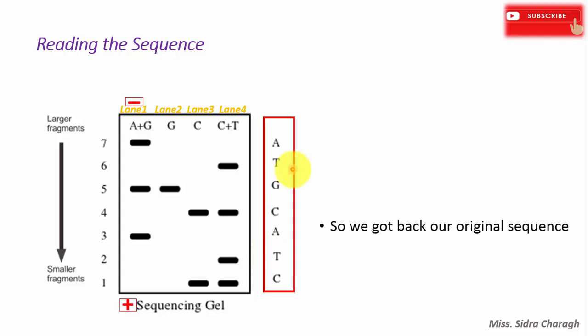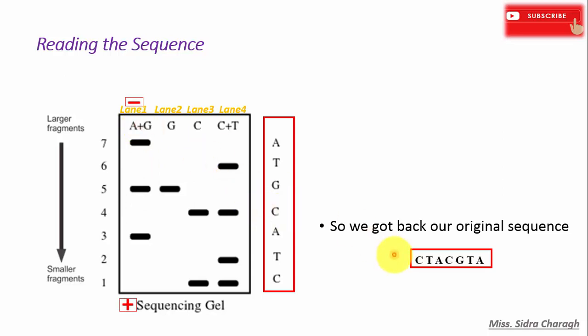For correct reading, remember we start from the positive end of the gel to the negative end of the gel, and in this manner we obtain the sequence from the five prime to three prime direction. That concludes the Maxim-Gilbert DNA sequencing method.